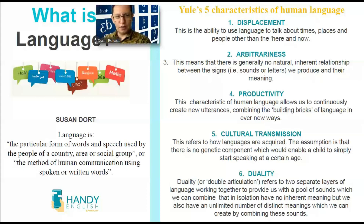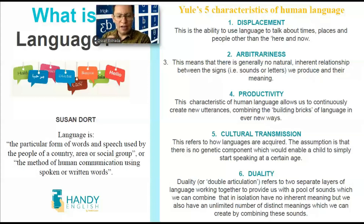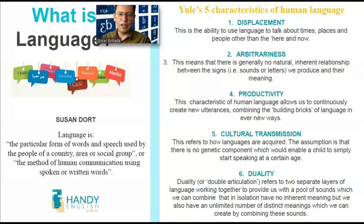Finally, the last characteristic of human language according to George Yule is duality, also called double articulation. It refers to two separate layers of language working together. It provides us with a pool of sounds which we can combine, and if we had them in isolation, they would not give any meaning. At the same time, we have an unlimited number of sounds that, if we put together, we can create new words. Also, this duality may mean that in some languages we have words or sounds that will mean nothing in another language.